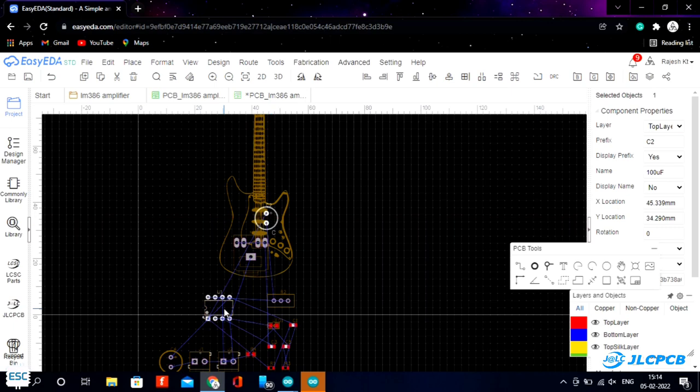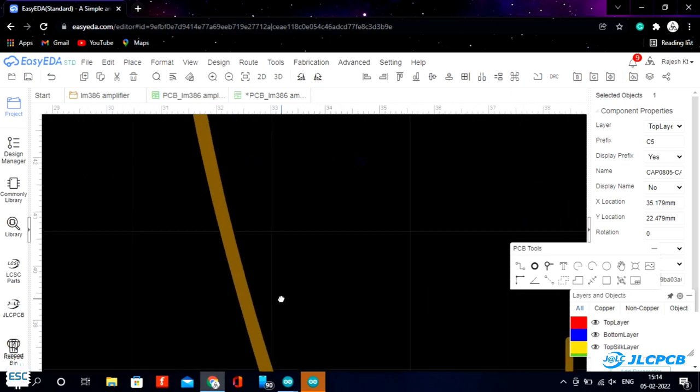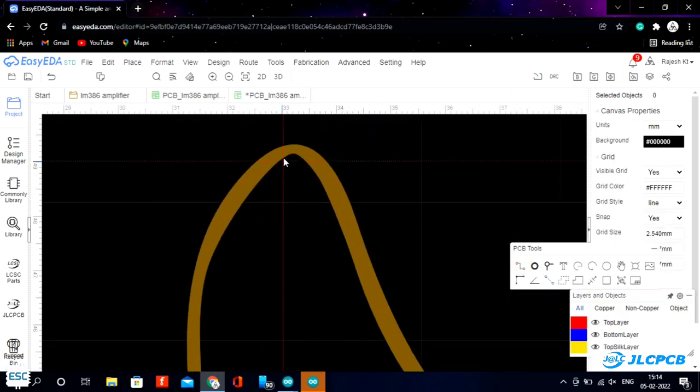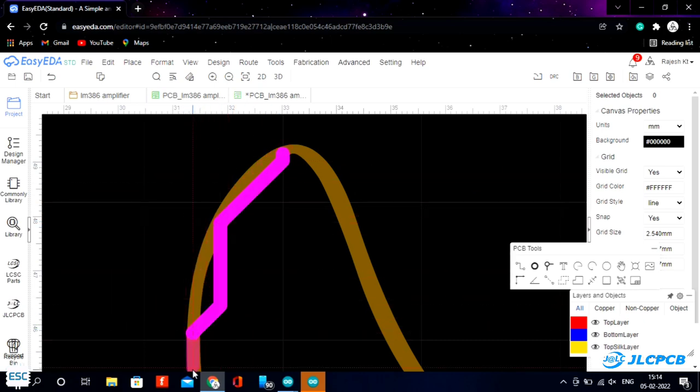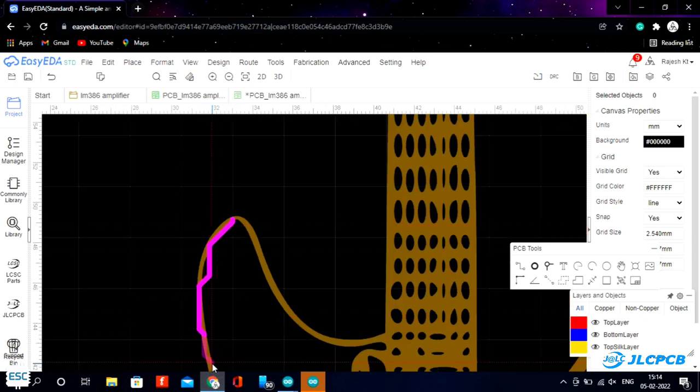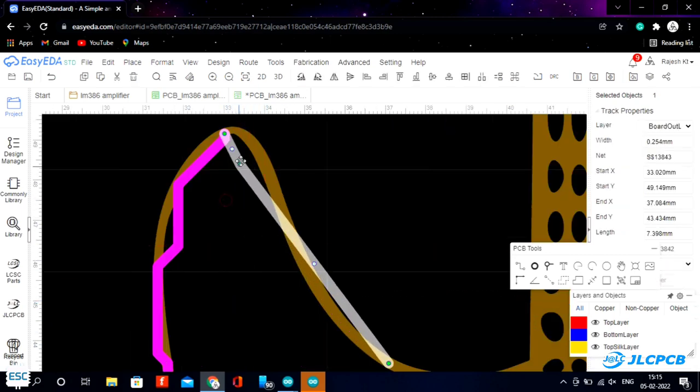Next I placed all components inside the guitar image. Then I selected the board outline and drew lines over the guitar image. Then I dragged the lines and made the exact shape.